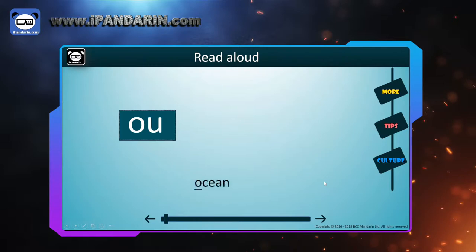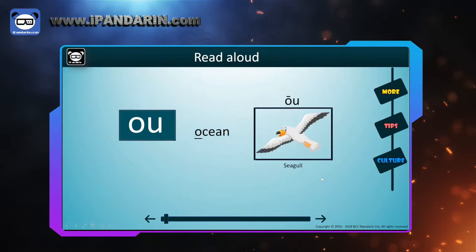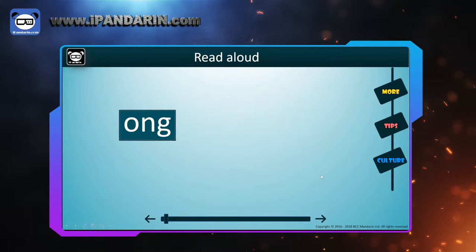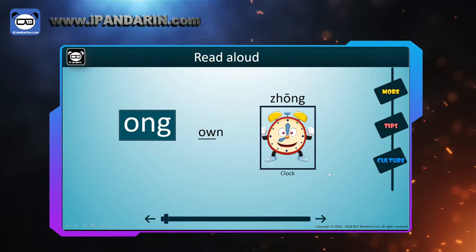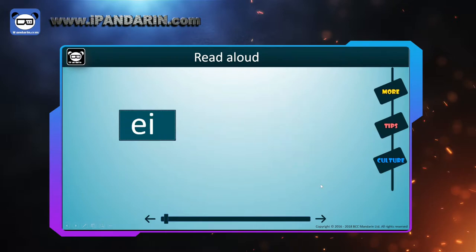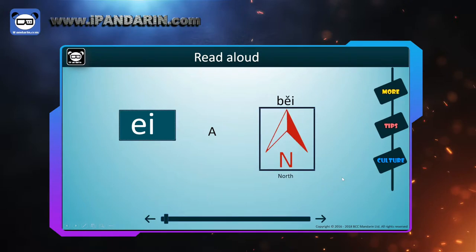AO — like 'A' in 'ocean'. And in Chinese, 海 (hǎi), which means sea. OU — like 'ou'. And in Chinese, 钟 (zhōng), which means clock. 北 (běi), which means north.